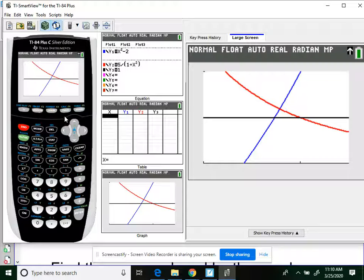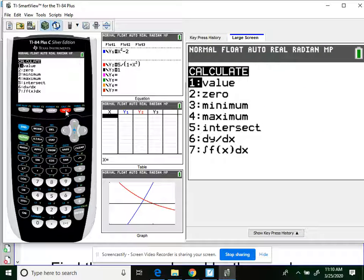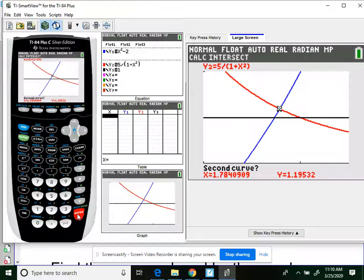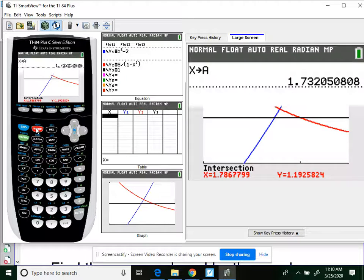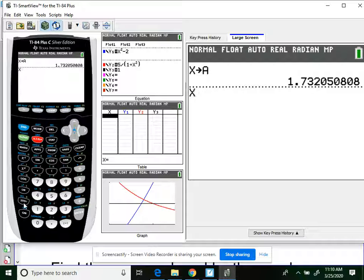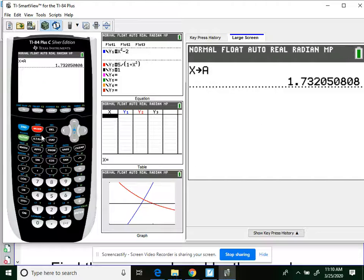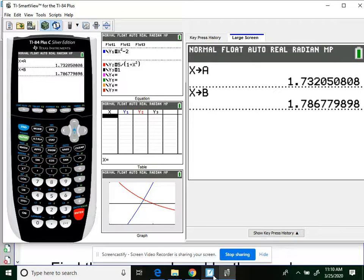Next point of intersection. Second. Trace. Intersect. Enter, enter, enter. 1.786. X. Store. Alpha B. Oopsies. I hit second. Let's do the alpha. Alpha B. Enter. So back. 1.786.